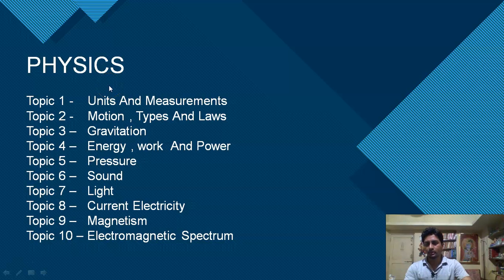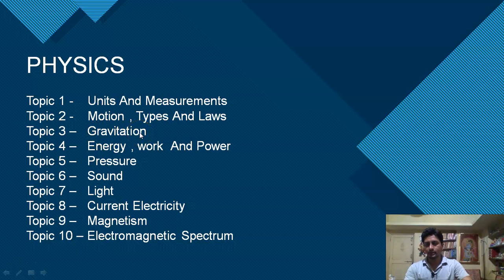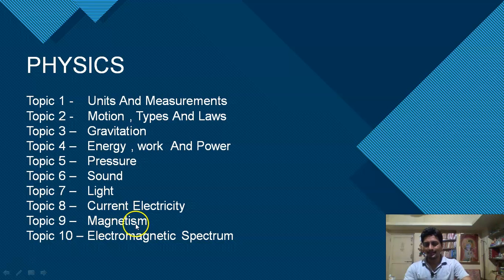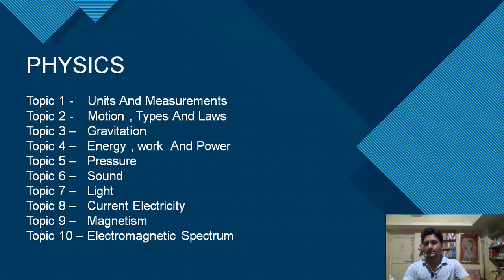First, let us talk about the important topics of physics that you need to cover in any examination. The first topic is units and measurement, which is a basic topic. Second: motion, types and laws. Third: gravitation. Fourth: energy, work and power. Then pressure, followed by sound, light, current electricity, magnetism, and electromagnetic spectrum. These 10 important topics you can never miss out — read them thoroughly and revise them again and again. These topics will fetch you maximum marks as they are the high-yielding topics of physics.